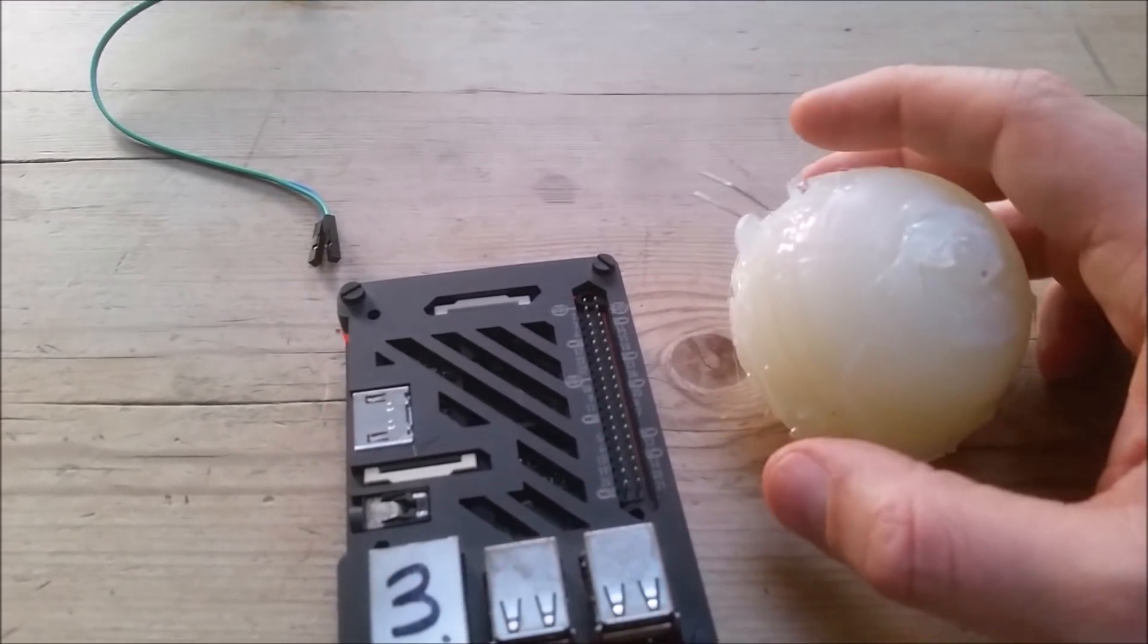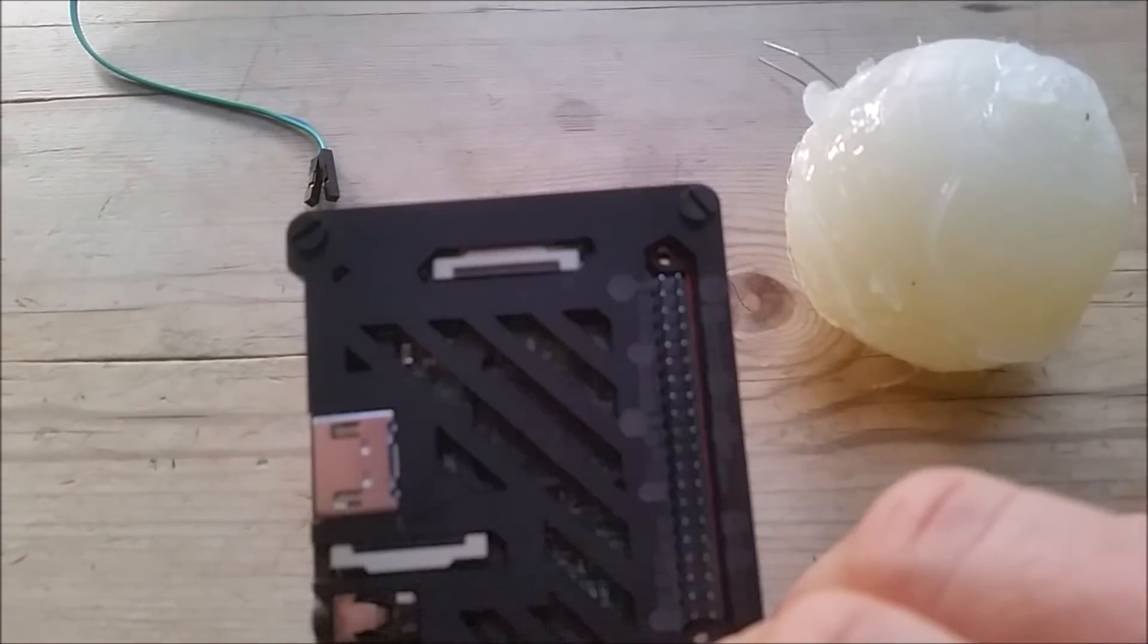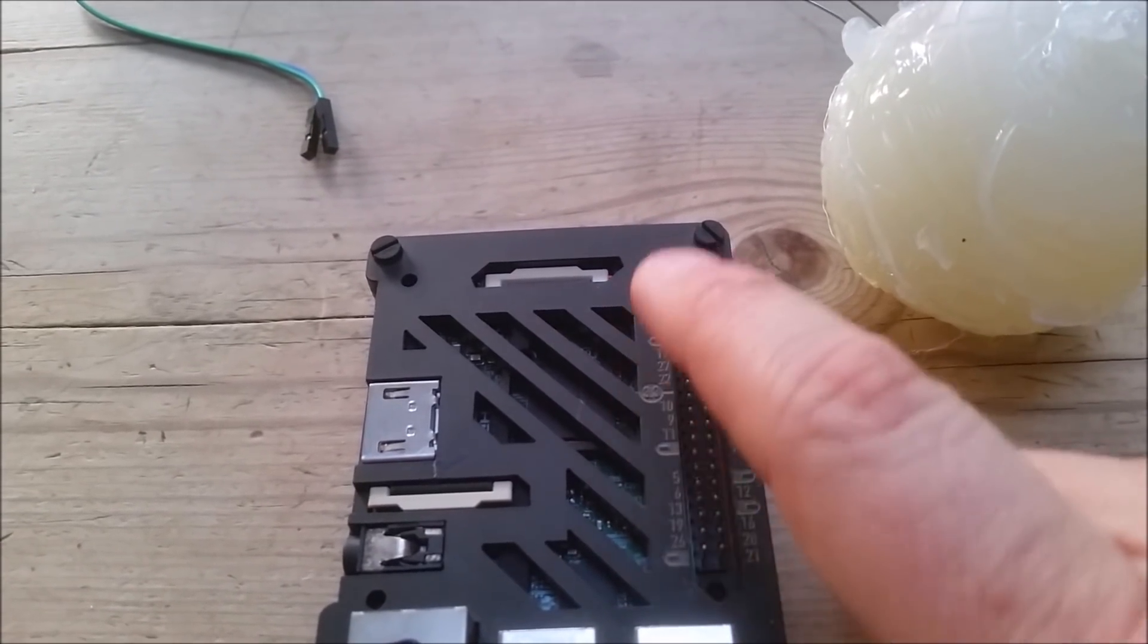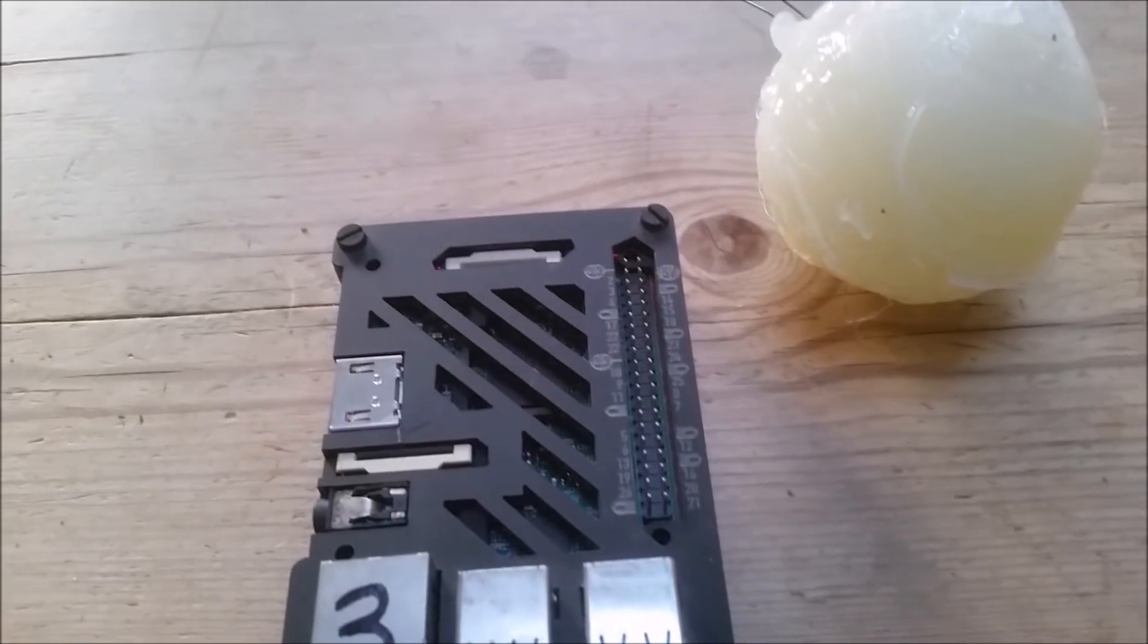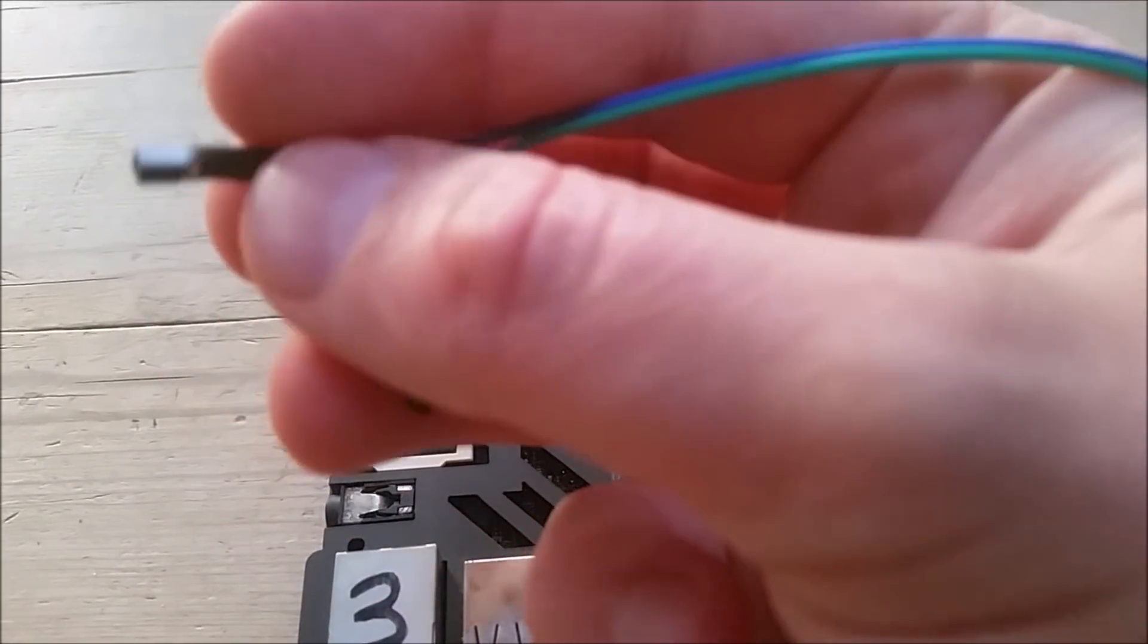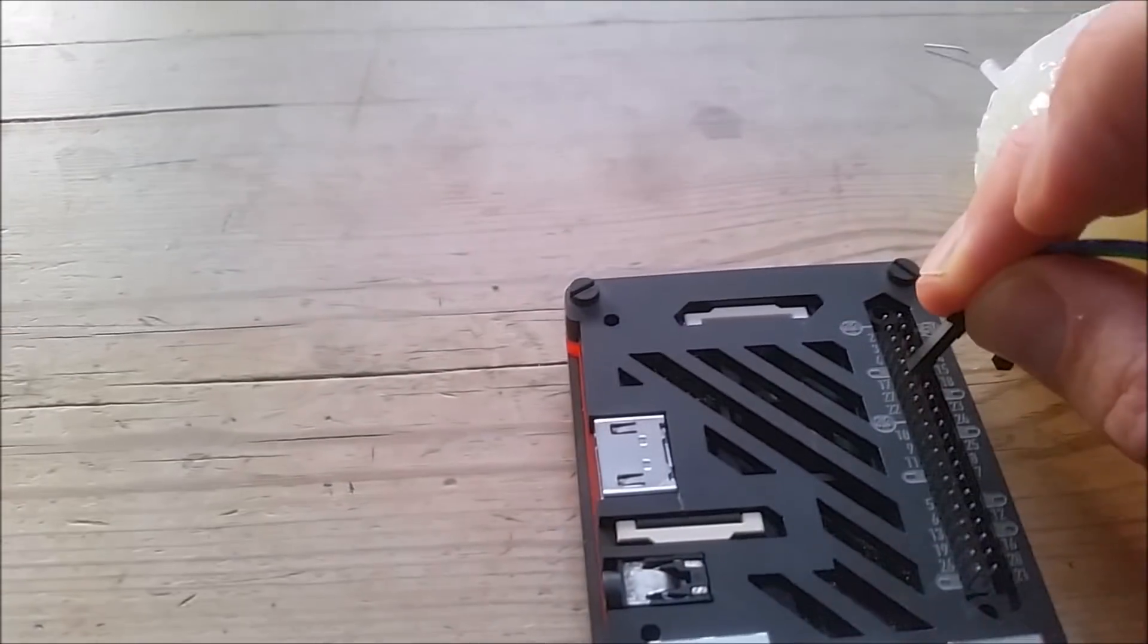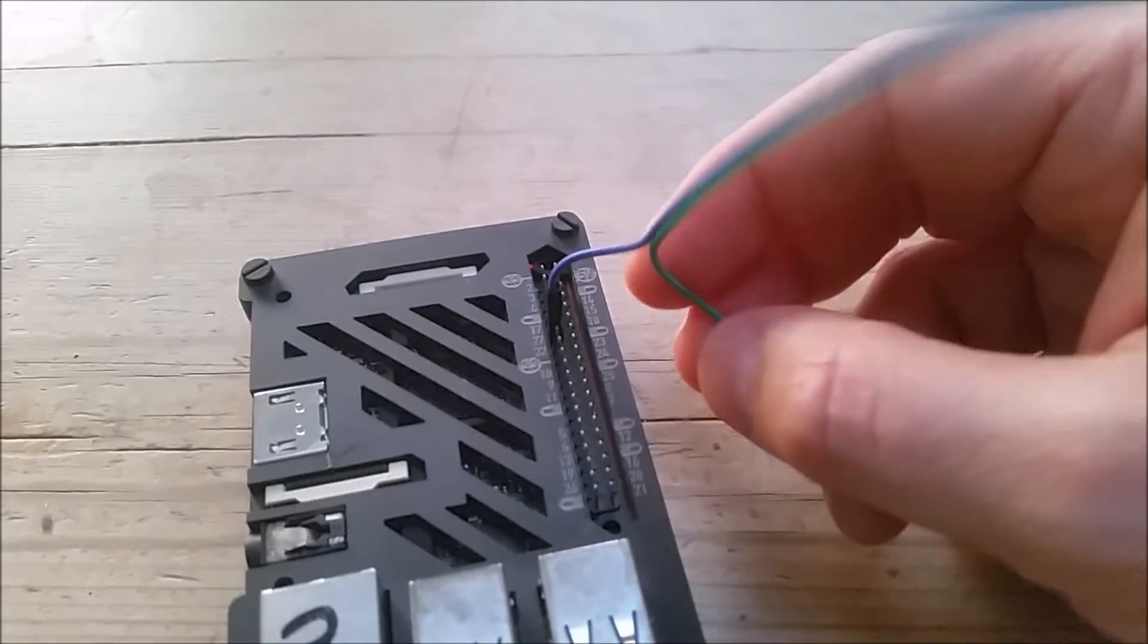We're going to use GPIO pin number 17 on here. It's got a nice little label on it there, you can just see it. But obviously you can count down the number if you need to. So what I'm going to do is put the positive one, the blue one, on pin number 17.